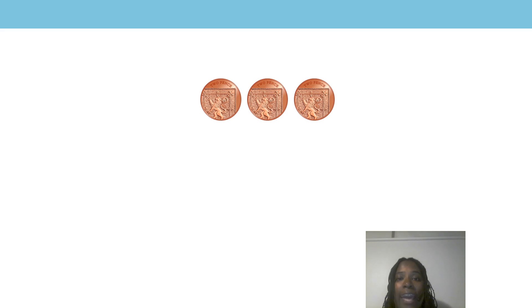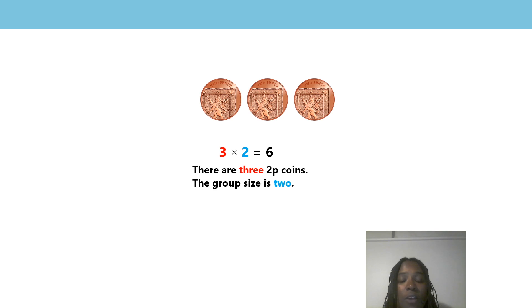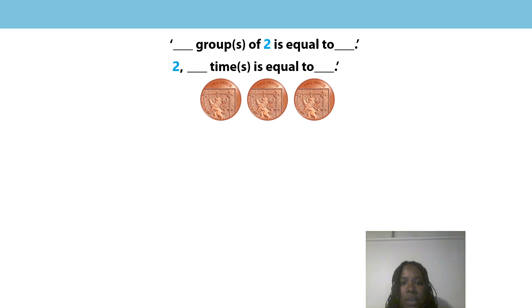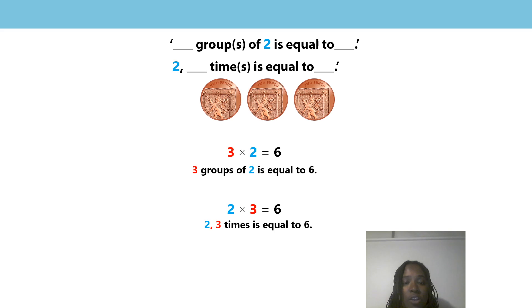So now it is your turn. Can you write two equations to match this picture? Pause the video and write your equations. Did you write 3 times 2 is equal to 6? That is correct — there are 3 two-pence coins, the group size is 2. And did you also write 2 times 3 is equal to 6? Because the group size is 2 and a 2p coin appears 3 times. There are 6 altogether. Well done!